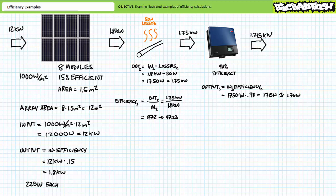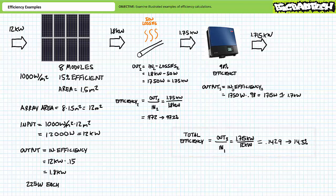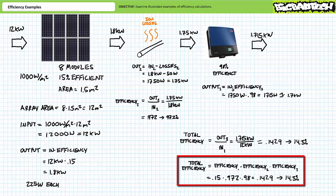Now that we've inspected each stage, let's examine the efficiency of the complete system. Ultimately, the system consumed 12 kilowatts of input to yield 1.715 kilowatts of output — a total efficiency of 1.715 over 12, or roughly 14.3%. Note that the complete system efficiency is less than the least efficient stage (the PV modules). Also note it's possible to directly calculate total efficiency by multiplying each stage's efficiency: 15% × 97.2% × 98% yields roughly 14.3%, as expected.